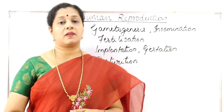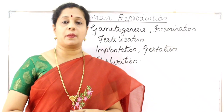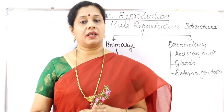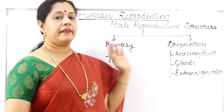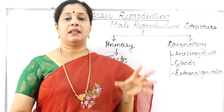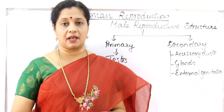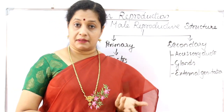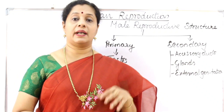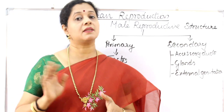Before we start with the gametogenesis process, we have to understand the structure of the reproductive system. Let's start with the male reproductive structure. The male reproductive structure includes many parts, classified as primary organs and secondary organs. The primary organ is where the main events happen — that means the formation of gametes. In males, the primary organ is the testis, whereas in females it is the ovary.